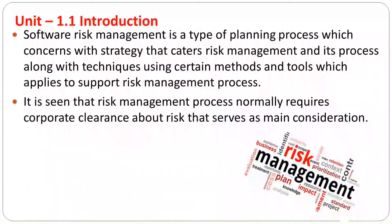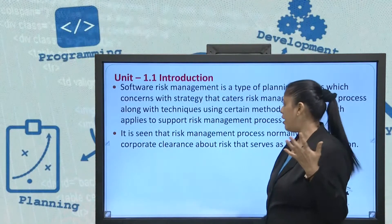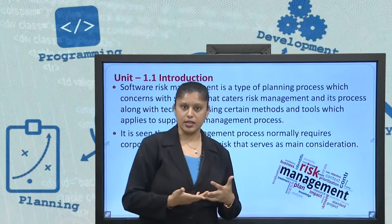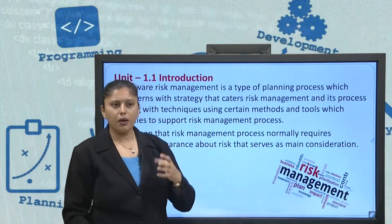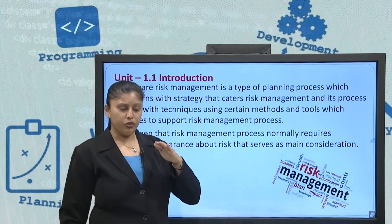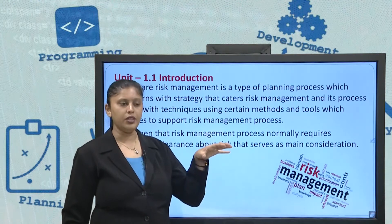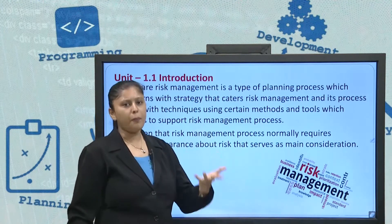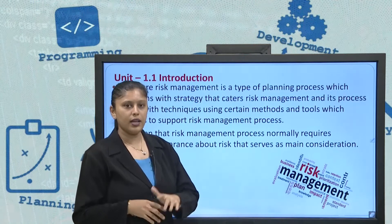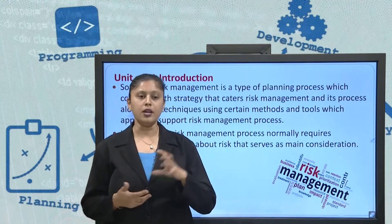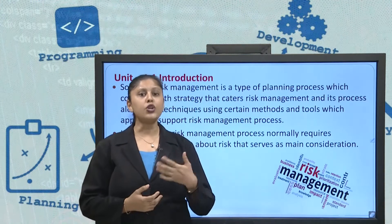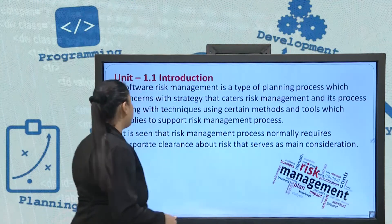The risk management process normally requires corporate clearance about risk that serves as the main consideration. The corporate level of clearance is required — when you have noticed some risk, that risk management needs approval. It needs to be approved that yes, this particular risk is there, and to manage that risk I have certain tools and techniques involved to minimize it. You need to approve it, and you cannot work alone — a single person cannot work on it. You need a group of people to analyze that risk and work out how to avoid it.